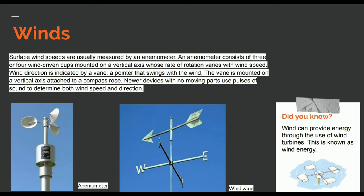We should have an idea of a wind vane. It is a pointer which swings in the direction of the wind. It has the cardinal points, and wherever the pointer swings, this indicates the direction the wind is blowing.